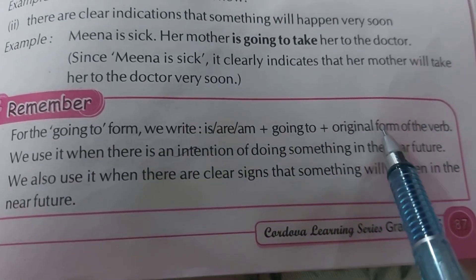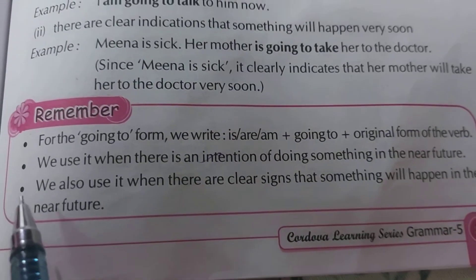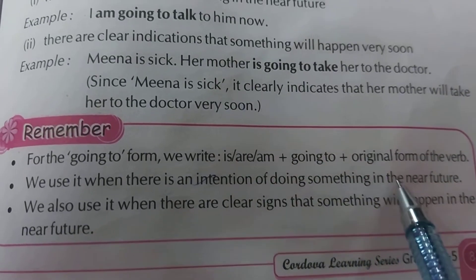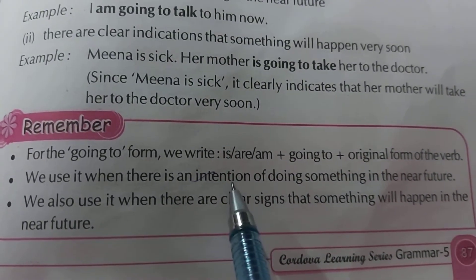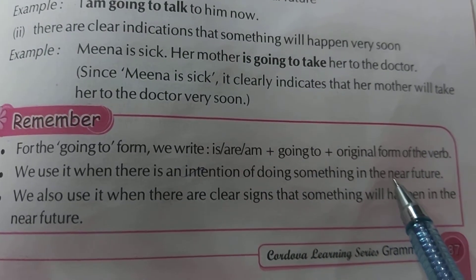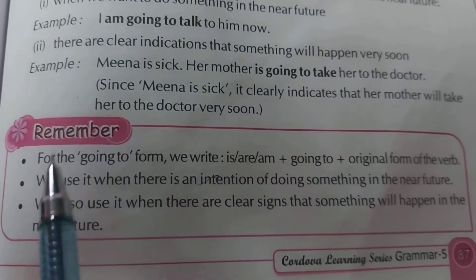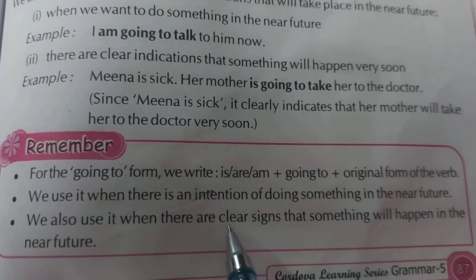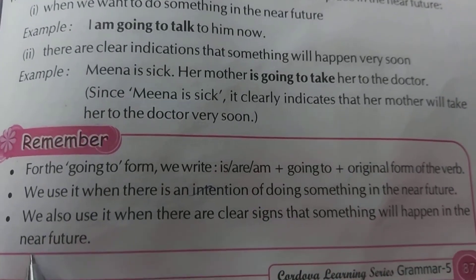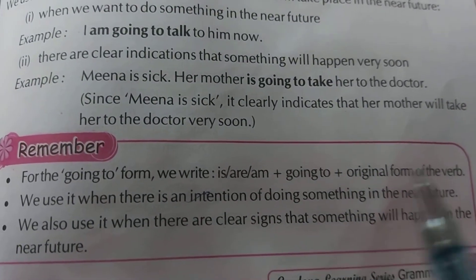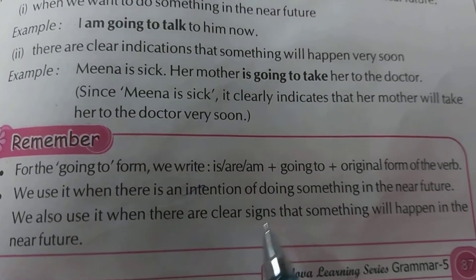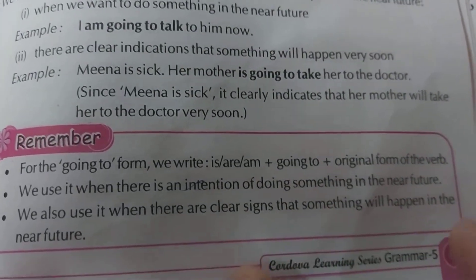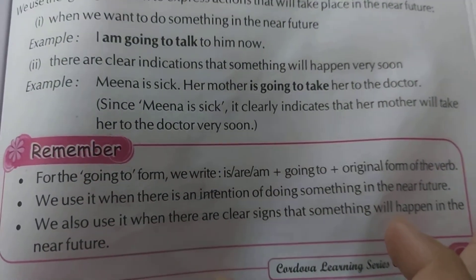So where do we use the going to form? First, the rule is: is/am/are + going to + original form of verb. Second, we use it when there is an intention of doing something in the near future. We also use it when there are clear signs that something will happen in the near future. Both cases come under the going to form.